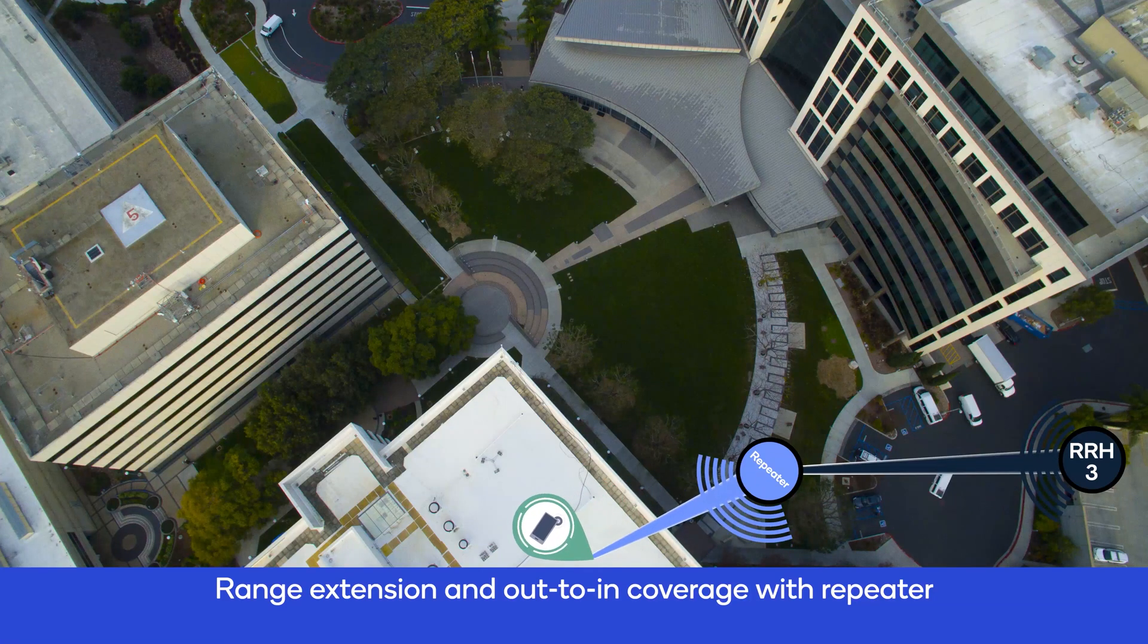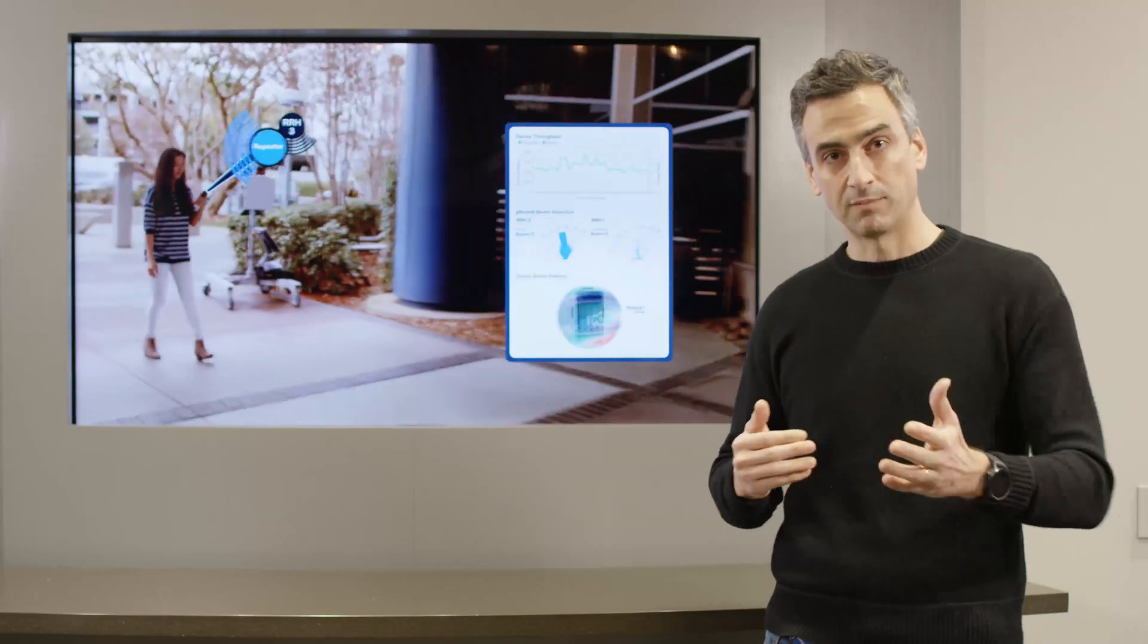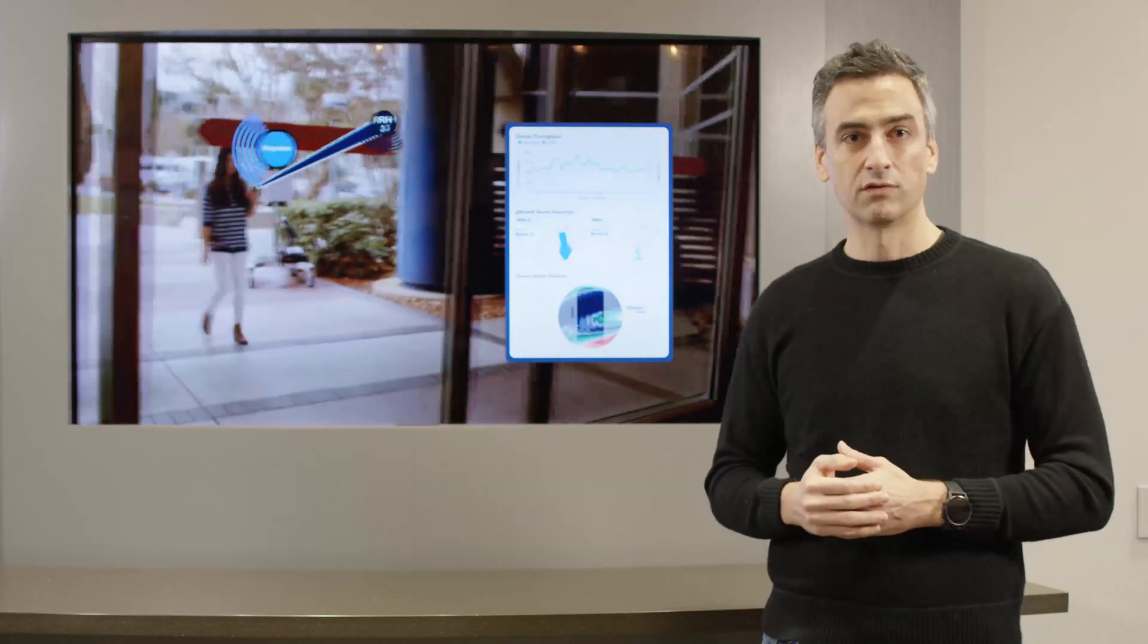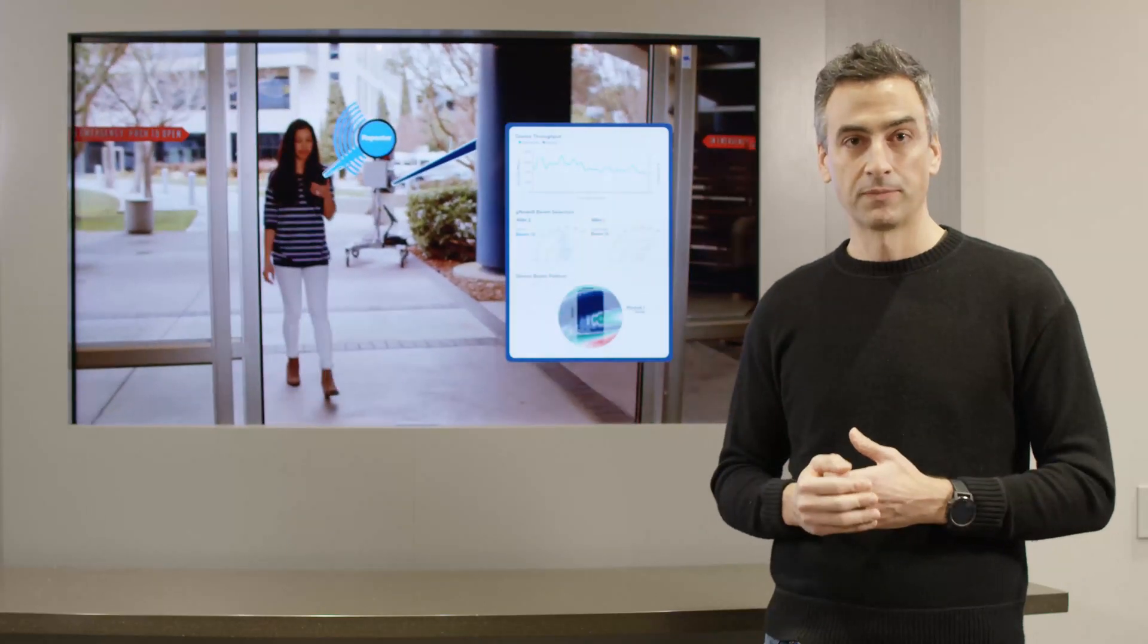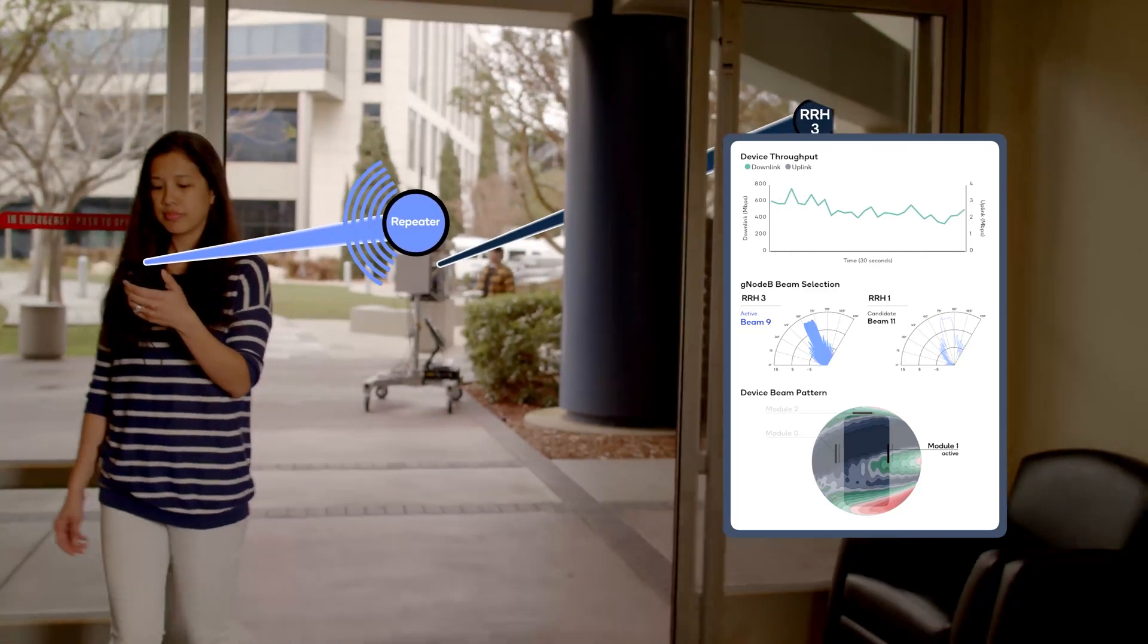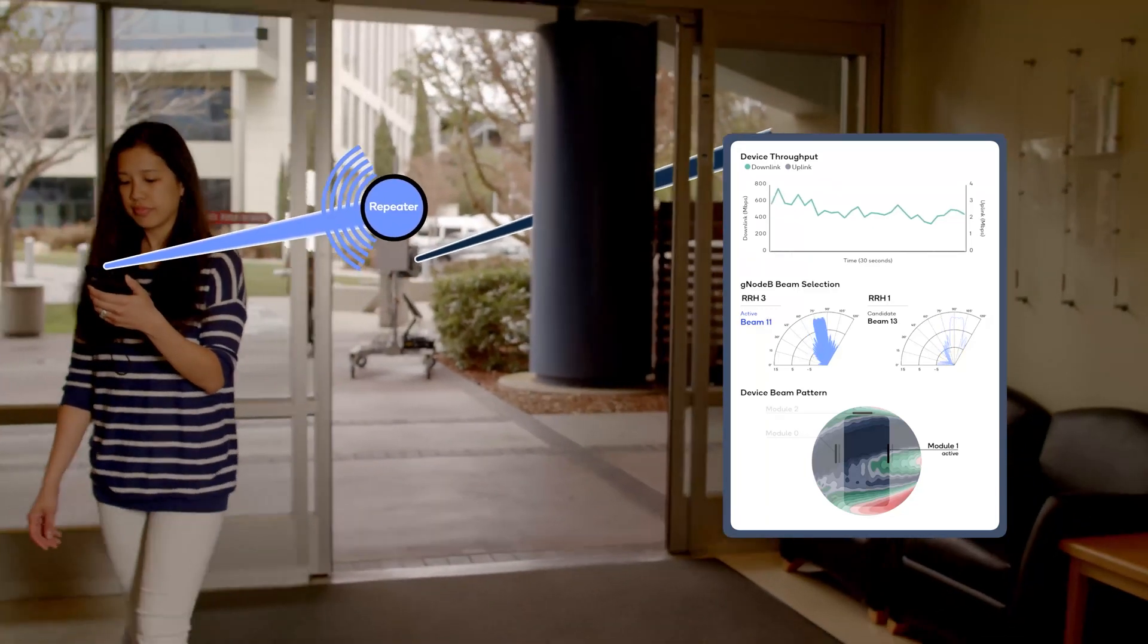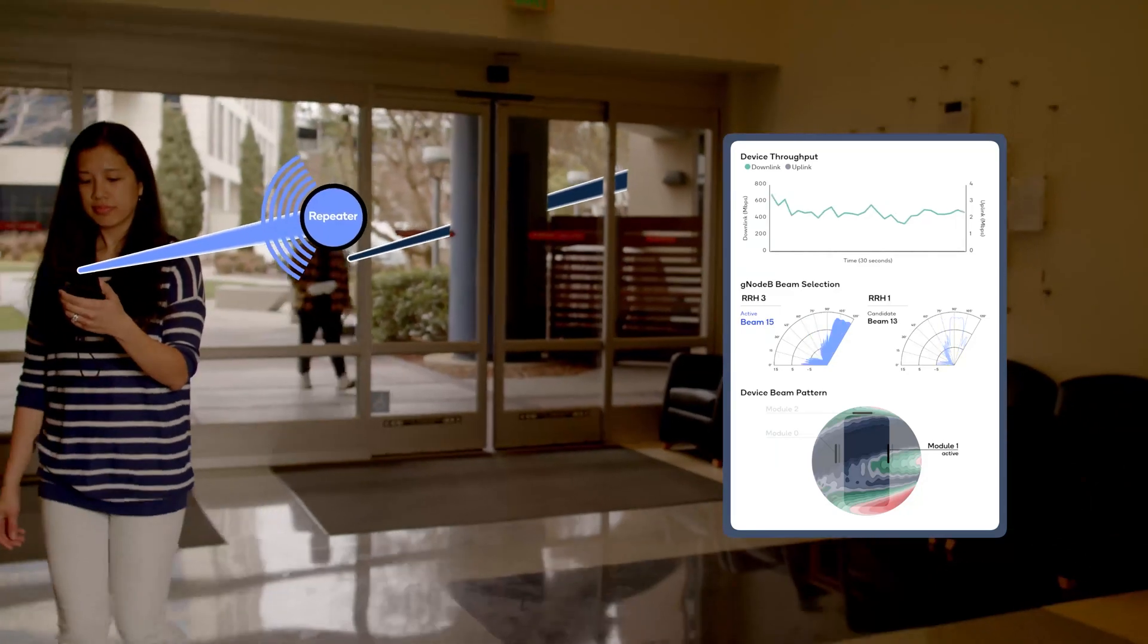Repeaters are not only good for overcoming the diffraction loss of going around buildings but also to overcome penetration loss going from outdoors to indoors. This would be key to provide any kind of coverage in an indoor space - a lobby, cafe, or store - where you have a high density of users and you want to provide data offload.